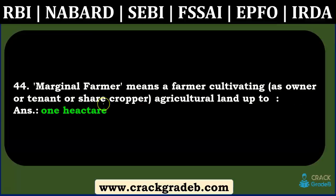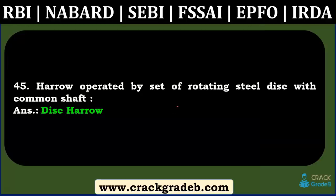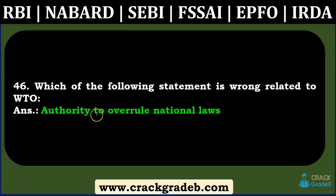Marginal farmer means a farmer cultivating as owner, tenant, or sharecropper on agricultural land up to one hectare — covered in the agriculture scheme chapter. Disc harrow — operated by a set of rotating steel discs on a common shaft — was indirectly covered with an image showing rotating steel discs. Which WTO function statement is wrong — authority to overhaul national laws — covered in the International Economic Institutions chapter.